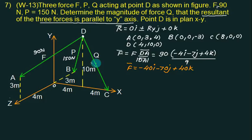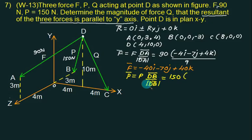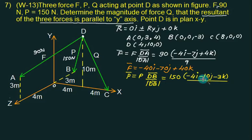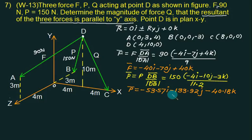P̄ is directed from D to B. P̄ = P times (DB̅ upon mod of DB̅). The value of P is 150. B minus D: 0 minus 4 gives minus 4 I; 0 minus 10 gives minus 10 J; minus 3 K. After substitution the final value is minus 53.57 I, minus 133.92 J, and minus 40.18 K.